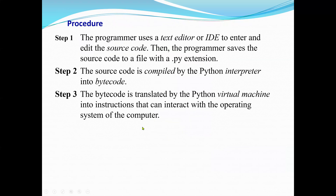The procedure is: first, the programmer uses a text editor or IDE to enter and edit the source code. Then the programmer saves the source code to a file with a .py extension — without the extension, the system cannot recognize it as a Python file. This is similar to Java, where the extension must be .java. After writing and saving, you compile it using the Python interpreter, and then the bytecode is translated by the Python virtual machine into instructions the operating system can execute.